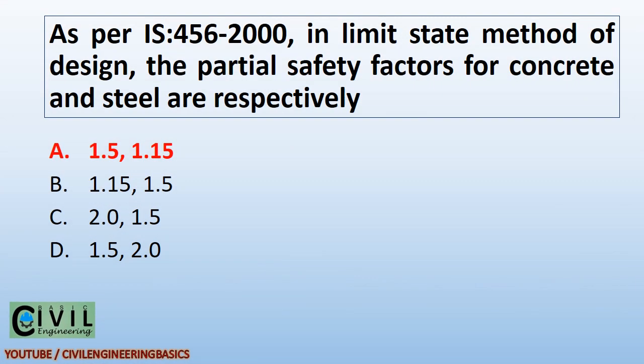As per IS 456:2000, in the limit state method of design, the partial safety factors for concrete and steel are 1.5 and 1.15 respectively. Partial safety factor for concrete is 1.5 and for steel is 1.15.